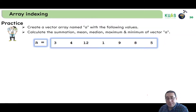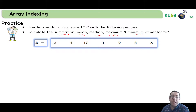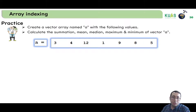Let's practice. The exercise is: create a vector array named A with the following values, and then calculate the summation, mean, median, maximum, and minimum of A — essentially the descriptive statistics of A. Let's go to our code to check this using MATLAB and LiveScript.